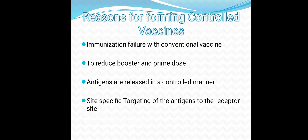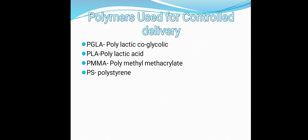Why are we forming controlled vaccines? There are four major factors. First, immunization failure with conventional vaccines — after two or three doses, vaccines may fail to produce specific immunity. Second, to reduce booster and prime doses. Third, antigens are released in a controlled manner, allowing us to control the rate and release of antigen. Fourth, site-specific targeting of antigen to the receptor site.